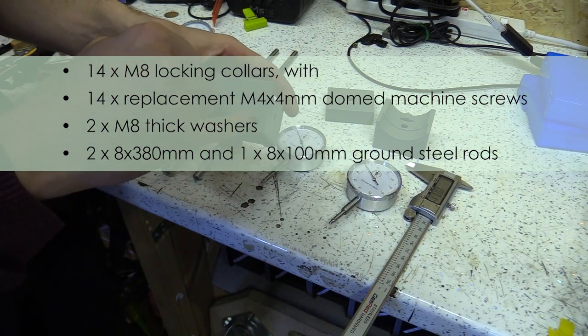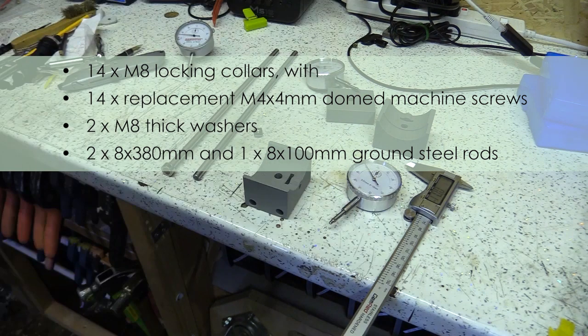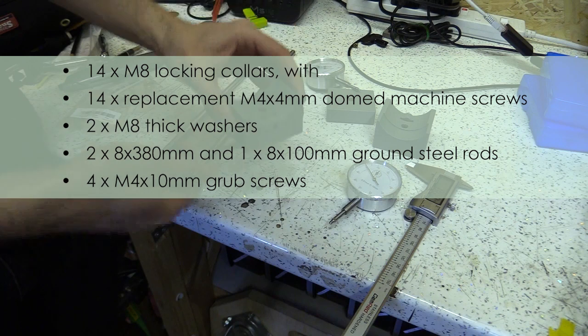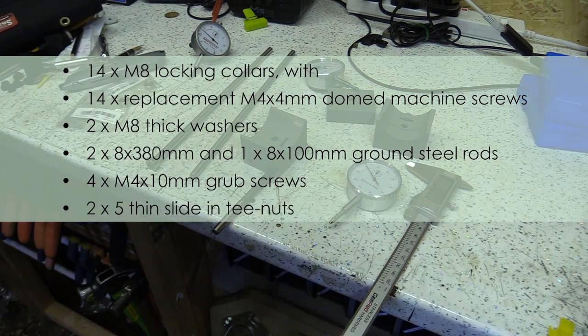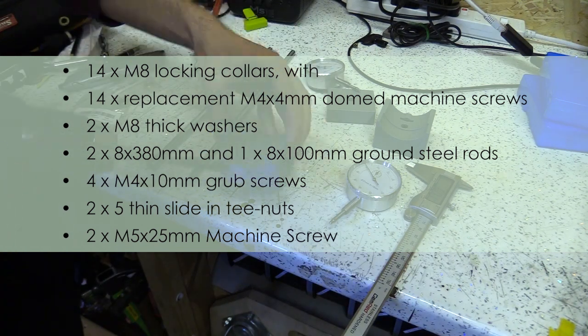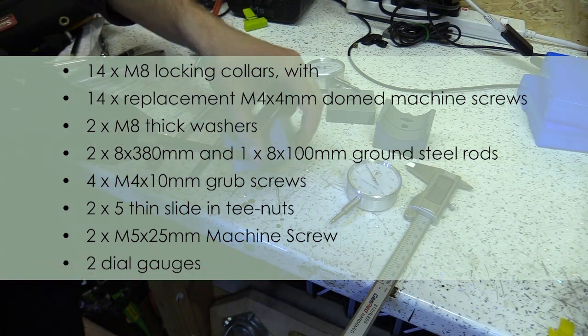As well as another ground steel rod at 100mm long. You will also need 4 M4 10mm grub screws, 2 M5 thin sliding T nuts, 2 M5 25mm long machine screws and finally 2 dial gauges.